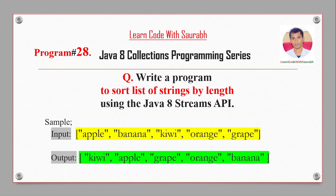Apple comes first because in the original list apple appears before grape, so that's why in the sorted list we get apple first, and grape appears after apple.